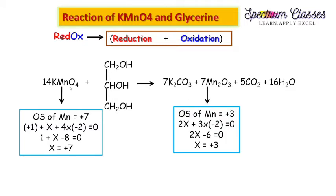Now Mn is converted to Mn2O3 in the product, so we check the oxidation state of Mn there. With a subscript of 2 for Mn and 3 for oxygen: 2x + 3×(−2) = 0, since the molecule is neutral. This gives 2x − 6 = 0, so x = +3. In the product Mn2O3, manganese is in the +3 oxidation state.